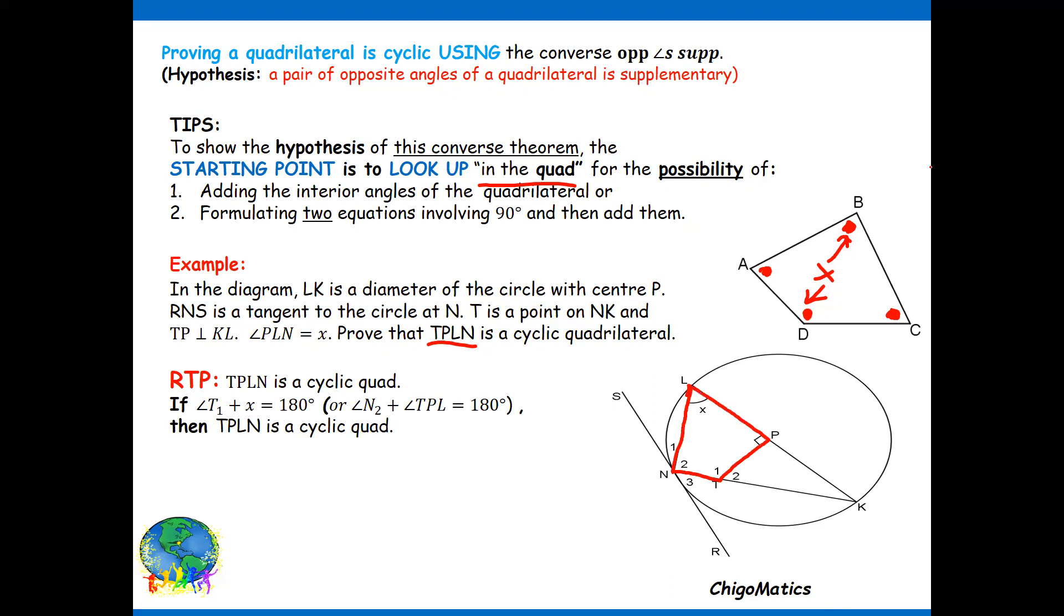Then we are saying T1, which is this angle, plus x I get 180, or N2 plus angle LTPL I get 180. These are the two possibilities that we have, so you can show one of them then conclude that it is cyclic. But I'm going to show the two of them so that you can learn something.